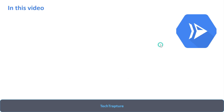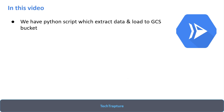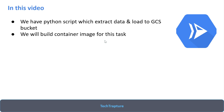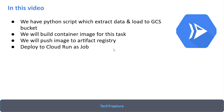Let's see what we are going to do in this video. First, we have a Python script which extracts some data and loads that data into a GCS bucket in the form of a JSON file. Currently this task is being done manually and we need to automate it with some kind of scheduling or job. Then we'll build a container image for this source code, push it to Artifact Registry, and deploy it on Cloud Run as a job. We'll test our job to verify it is working fine.